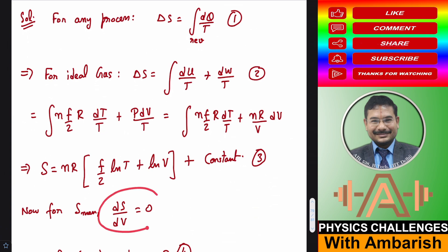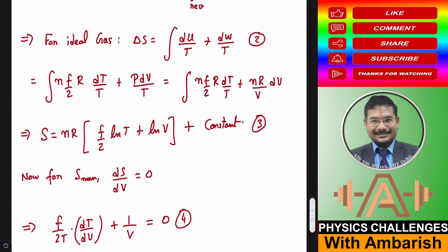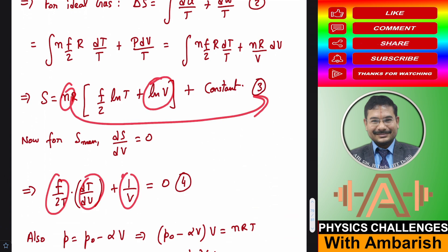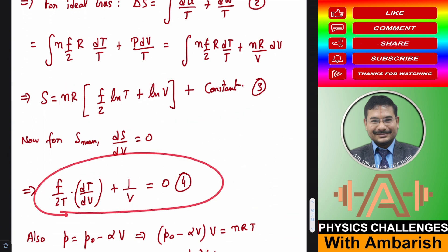But I want to maximize this entropy. So the derivative of entropy must be zero. For maximum entropy, the derivative must be zero. So what I do? I just differentiate this whole thing with respect to V. So what do I get? Constant derivative is zero and the derivative of this will be F/2T into dT/dV and derivative of this will be 1/V. If you divide on the right hand side, zero divided by NR will also be zero. So this is what you have if your dS/dV = 0.